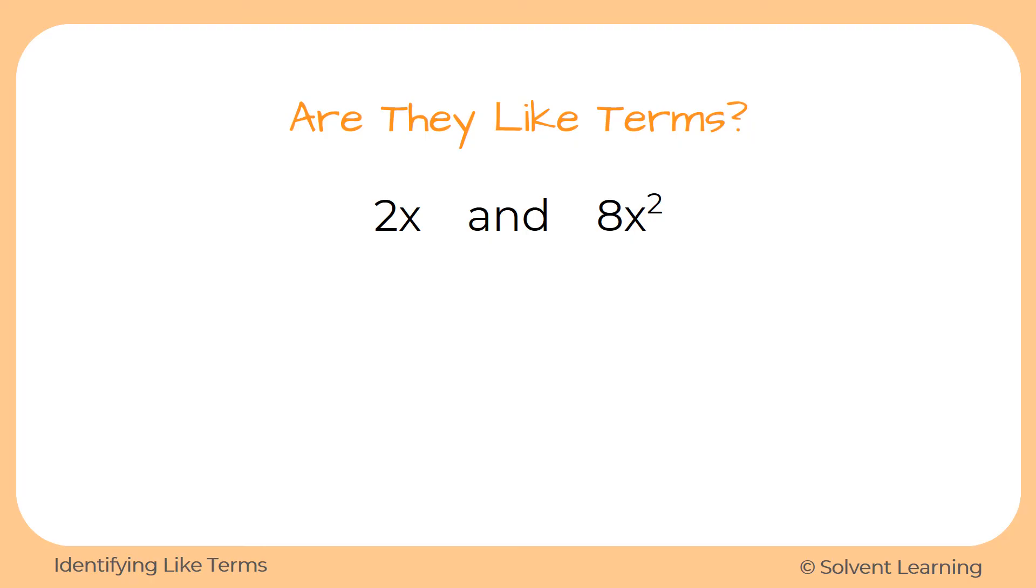Now we have 2x and 8x squared. Are they like terms? Well, they both do have x. They have the same variable, but if you remember what we said earlier, they have to have the same variable with the same exponent. So, if there's exponents with that variable, they have to have the same exponent for them to be considered like terms. Otherwise, they are not like. They are different kinds of terms. So, no, these are not like terms.